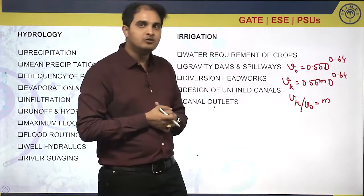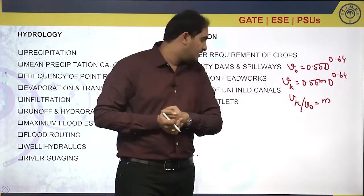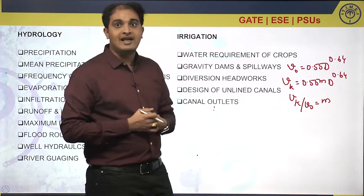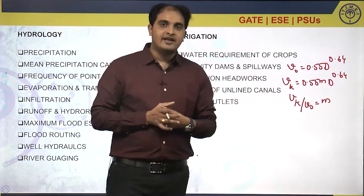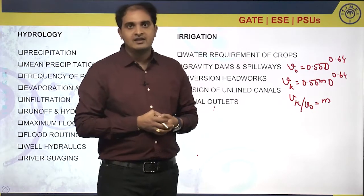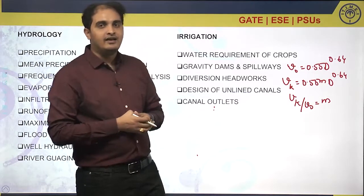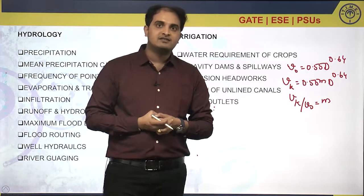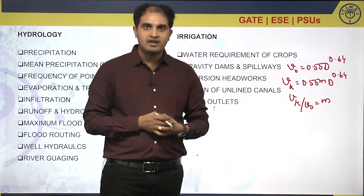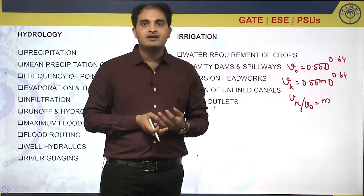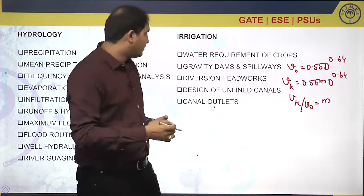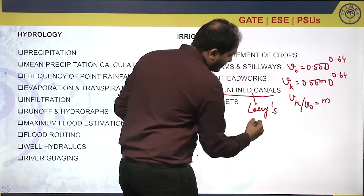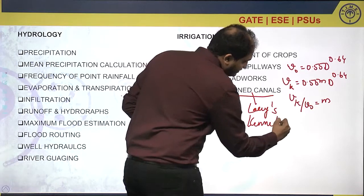Kennedy's theory uses Chezy's equation for the calculation of velocity. The next theory is Lacey's theory. Lacey developed a regime equation known as Lacey's regime theory. This theory focuses on the calculation of silt factor f = 1.76√d, as well as calculation of velocity, wetted perimeter, and scour depth. From a GATE and ESE point of view, we need to focus on both Lacey's theory and Kennedy's theory for the design of unlined canals.